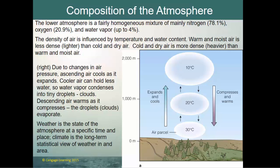Weather is the state of the atmosphere at a specific time and place, while climate is the long-term statistical view of weather in an area. Rising air typically creates foul weather — clouds and possibly showers — and sinking air creates fair weather.